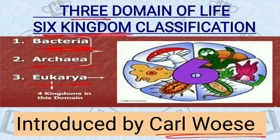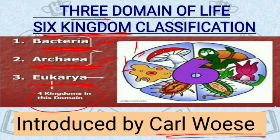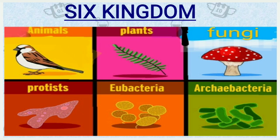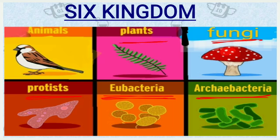Now, if we talk about each domain particularly — the Bacteria domain: it includes one kingdom, that is Eubacteria. The Archaea domain includes one kingdom — Archaebacteria. The Eukarya domain includes four kingdoms. So in total there are six kingdoms. The three domains are Bacteria, Archaea, and Eukarya. Under Archaea domain is Archaebacteria; under Bacteria domain is Eubacteria; under Eukarya domain are Protista, Fungi, Plants, and Animals.